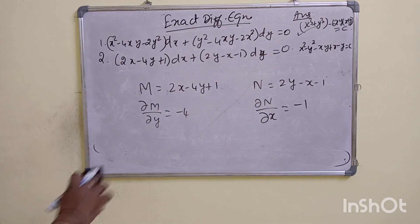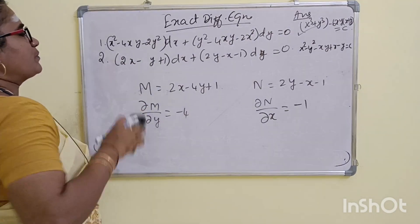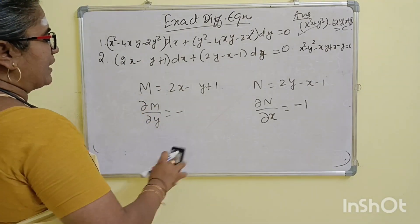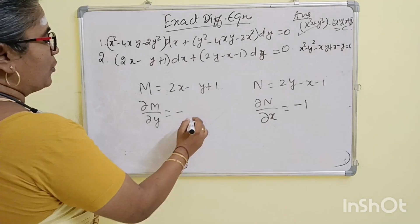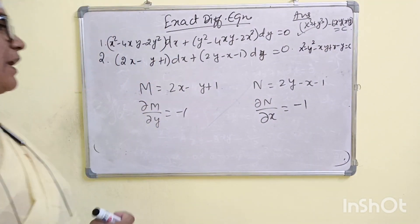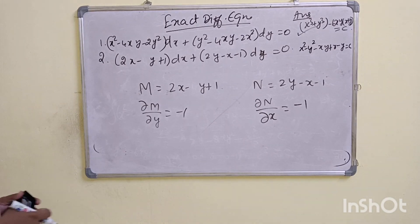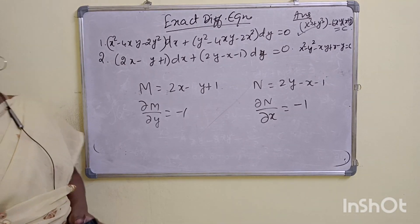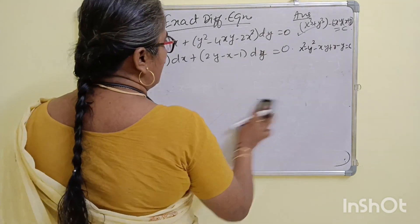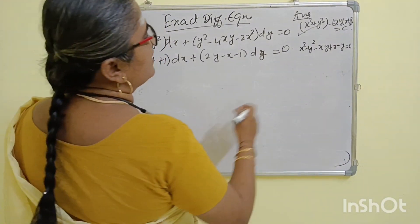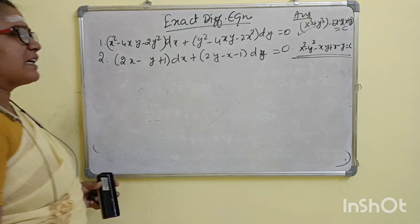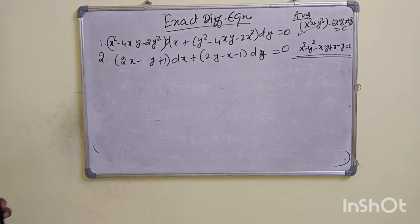So the given equation is not exact. Wait — here it is: 2x minus 1. ∂M/∂y equal to ∂N/∂x. Therefore, the given equation is exact and we can solve this. You can see the answer in the comment section.